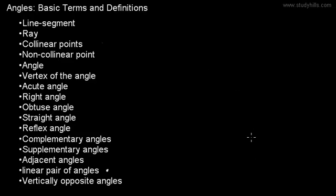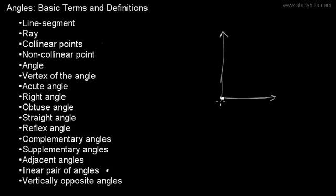A linear pair of angles consists of adjacent angles — they have a common vertex and one common ray. If the non-common rays form one straight line, they are called a linear pair of angles, because the sum of these two angles is equal to 180 degrees.